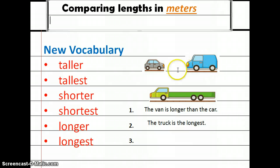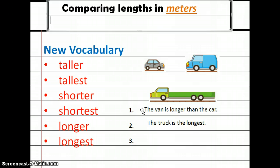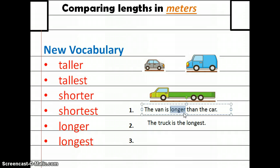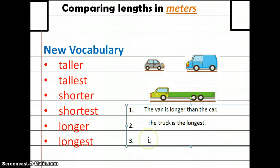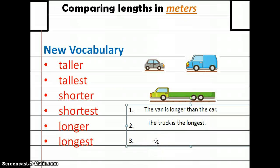If you like, you can go ahead and draw a car, a van, and a truck. The next thing I did was write two sentences using the new vocabulary words. I wrote 'The van is longer than the car' using the word longer, and 'The truck is the longest' using longest. For number three, it's blank — that means it's your turn to write your own sentence. Choose any of the new vocabulary words and write your sentence. Push pause while you write, then push play when you're ready.